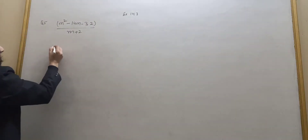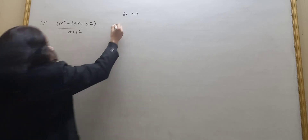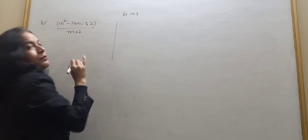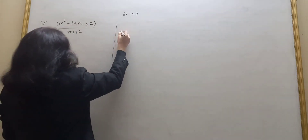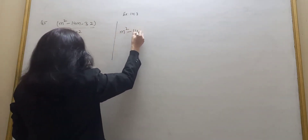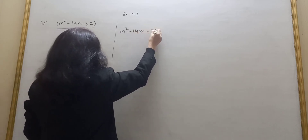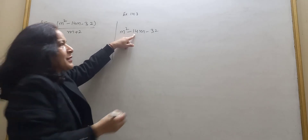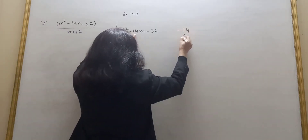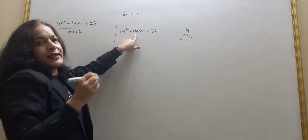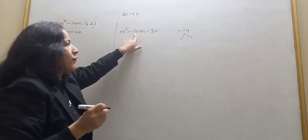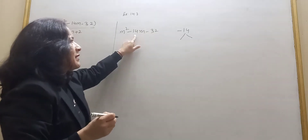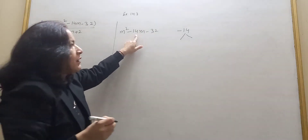You can factorize this numerator separately: m squared minus 14m minus 32, by splitting the middle term. You have to break minus 14 into two parts such that the product of those parts is the third term, minus 32, and the sum is minus 14.